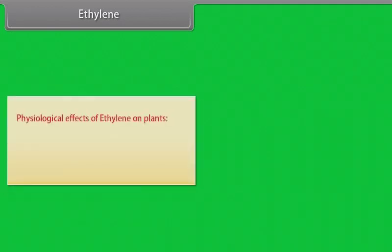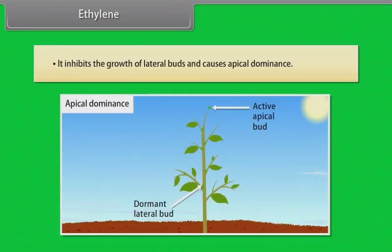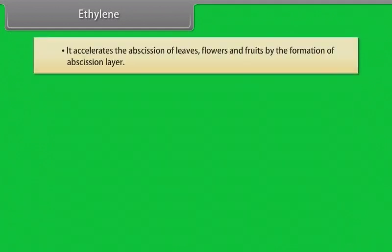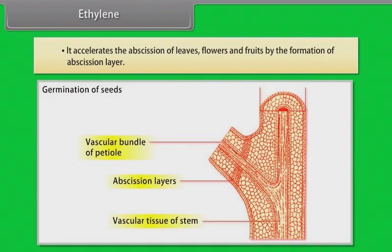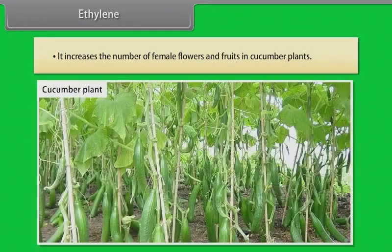Ethylene. Physiological effects of ethylene on plants: it modifies growth by inhibiting the elongation of stem and roots. It inhibits the growth of lateral buds and causes apical dominance. It accelerates the abscission of leaves, flowers, and fruits by formation of abscission layer. It retards flowering in most plants but induces flowering in pineapple, mango, and many other plants. It increases the number of female flowers and fruits in cucumber plants.